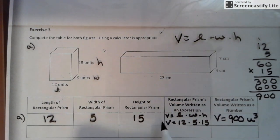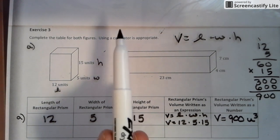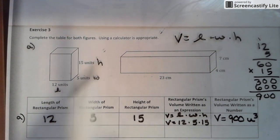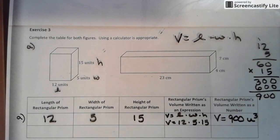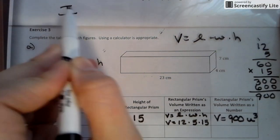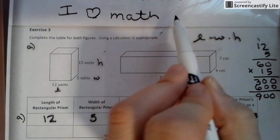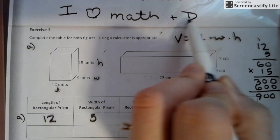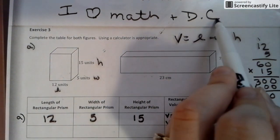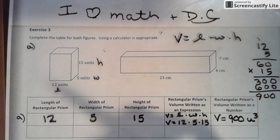So big V with little 3 for volume, big A with little 2 for area. That's what we have today. And as always, I love math. And of course, DC.